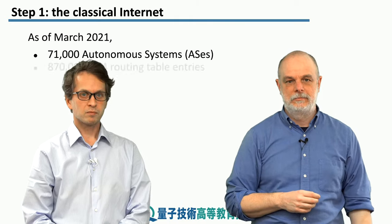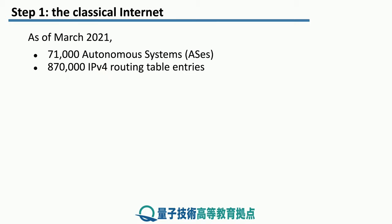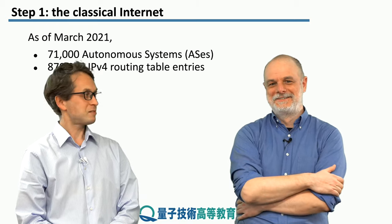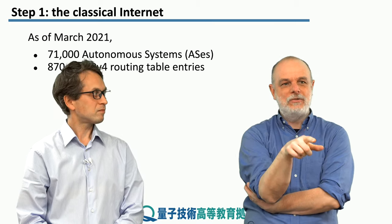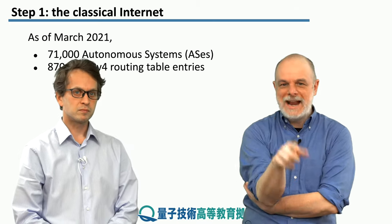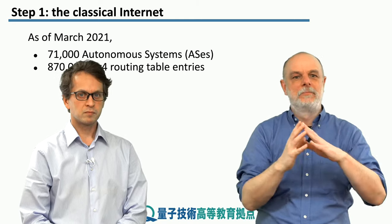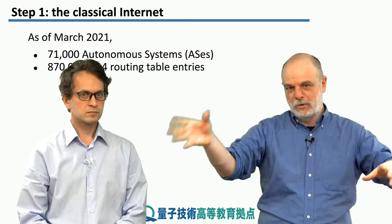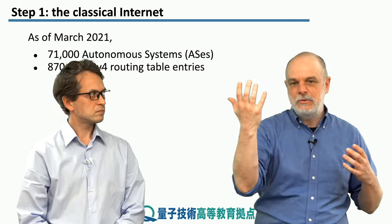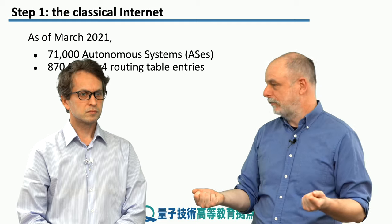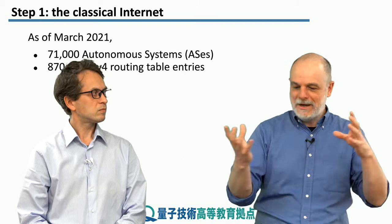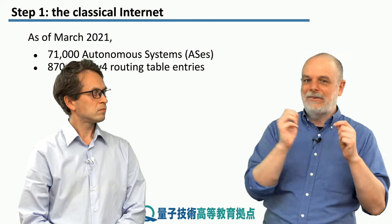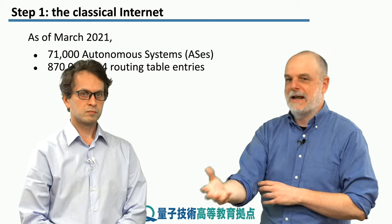There are around 870,000 IPv4 routing table entries. What does that actually mean? There are 870,000 relationships between pairs of networks out of those 71,000 networks — roughly 12 or 14 connections per network. On average, each one of those networks is going to be connected to about a dozen other networks at places called internet exchange points. Collectively, that entire set of routes is how you figure out how to get from your own network to whatever service you're trying to connect to somewhere on the other side of the planet.